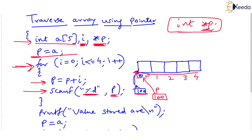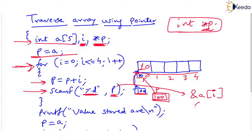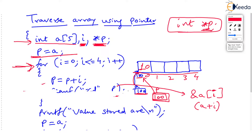Another way of writing this scanf would have been '&a[i]' — so first time with i=0, we scan the value of a[0]. Another way would have been 'a plus i', that is 'a plus 0'. Yet another way is to make a pointer, ask it to point to the begin location by making it equal to 'a', and then simply say scanf with 'p' where you give the address. So the value gets stored at that address.